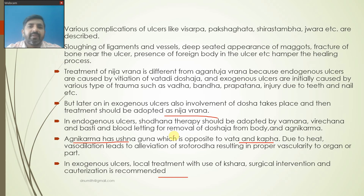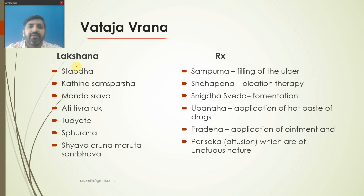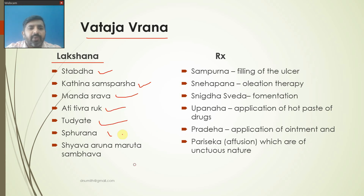There are three types of Nija Vrana: Vataja Vrana, Pittaja Vrana, and Kaphaja Vrana. These Varanas are identified based on differences in their Lakshana. Lakshanas of Vataja Vrana are Stambha, Atinasthamsparsha, Mandasrava, Ativyathu, Tudana, Sphurana, Shyavarna, and Marutasambhava.